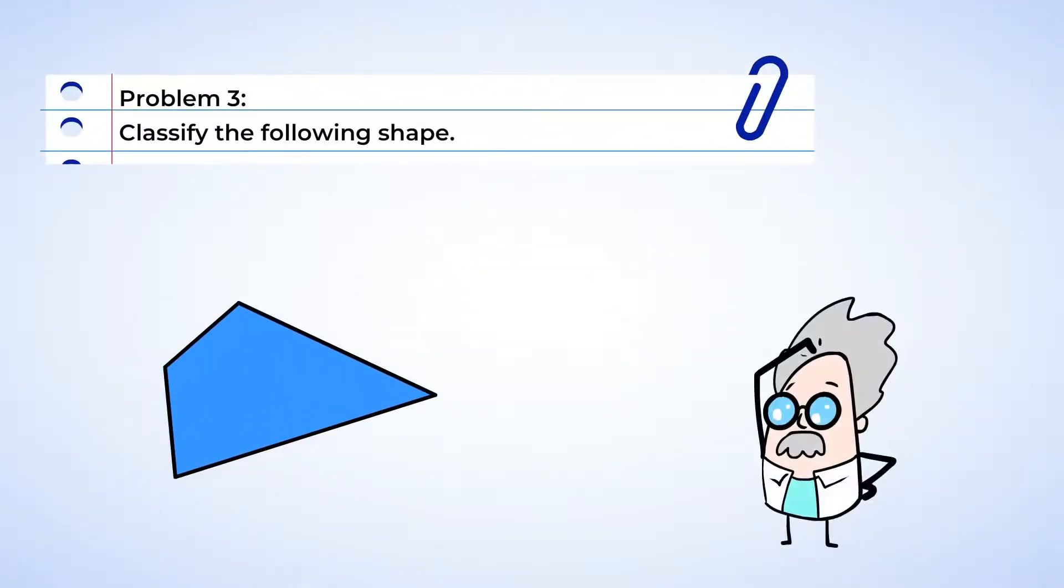Okay, we need to classify this shape. Well, first let's count the sides. 1, 2, 3, 4 sides. And this makes it a quadrilateral.